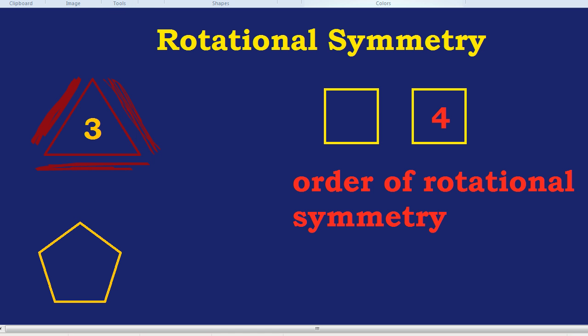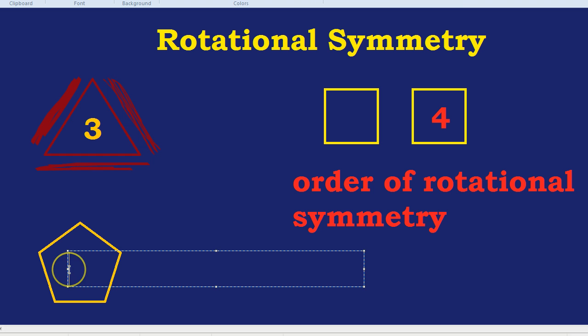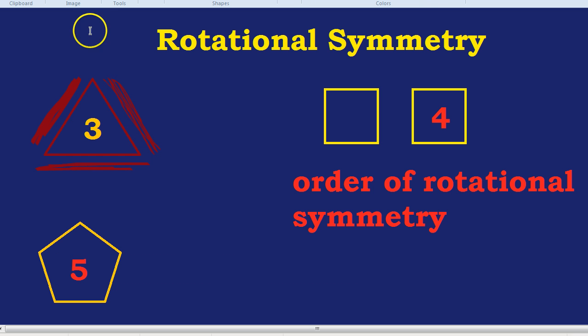The answer would be five. It has five different positions where it would look exactly the same. Again, if this was the base, it would look the same. If this side was the base, it would look the same. Same for this side, this side, and this side.